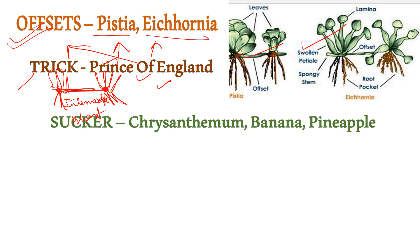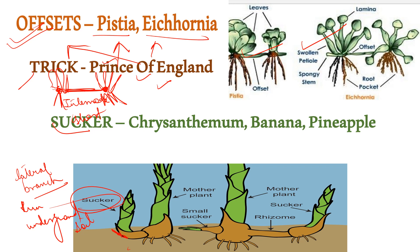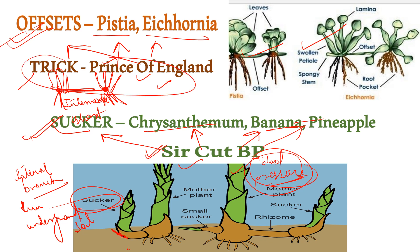The next stem modification is sucker. In sucker, a lateral branch grows from the underground stem and runs underground. The examples are chrysanthemum, banana and pineapple. The trick is: 'Sir cut BP' — blood pressure. From 'sir' it's sucker, from 'cut' it's chrysanthemum, from 'B' it's banana, and from 'P' it's pineapple.